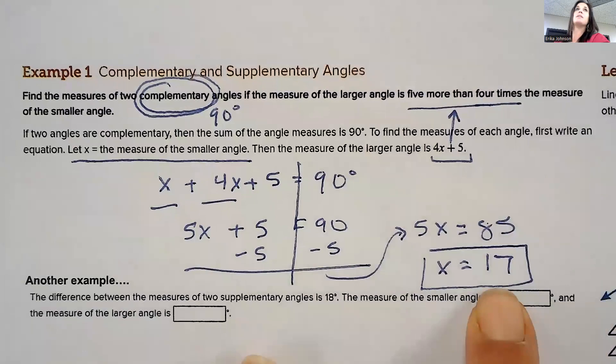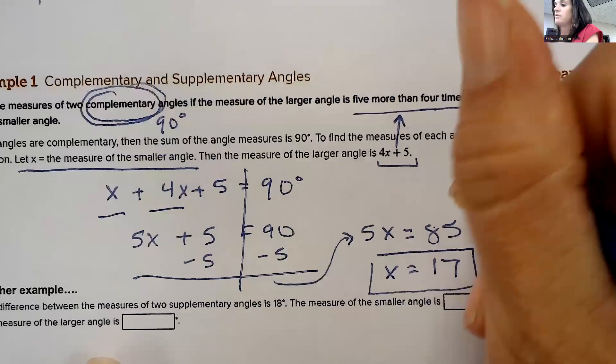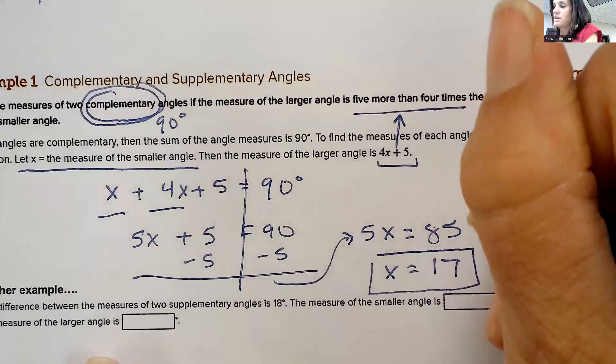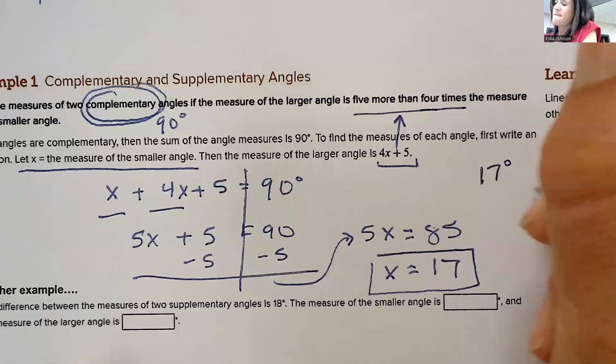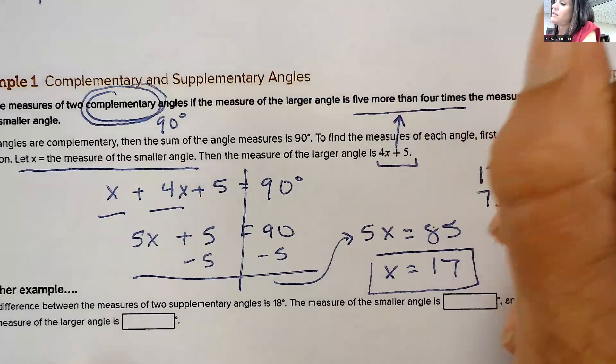It doesn't want X — it wants the measure of the angles. We've got to take that 17. That would be the smaller angle: 17 degrees. And the complementary angle would be 90 minus 17, which is 73 degrees.